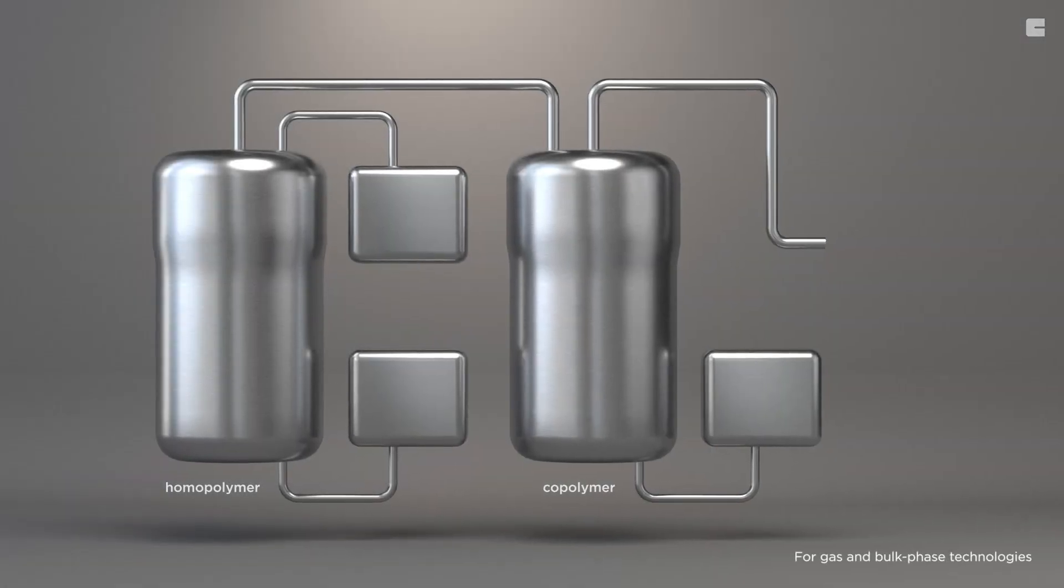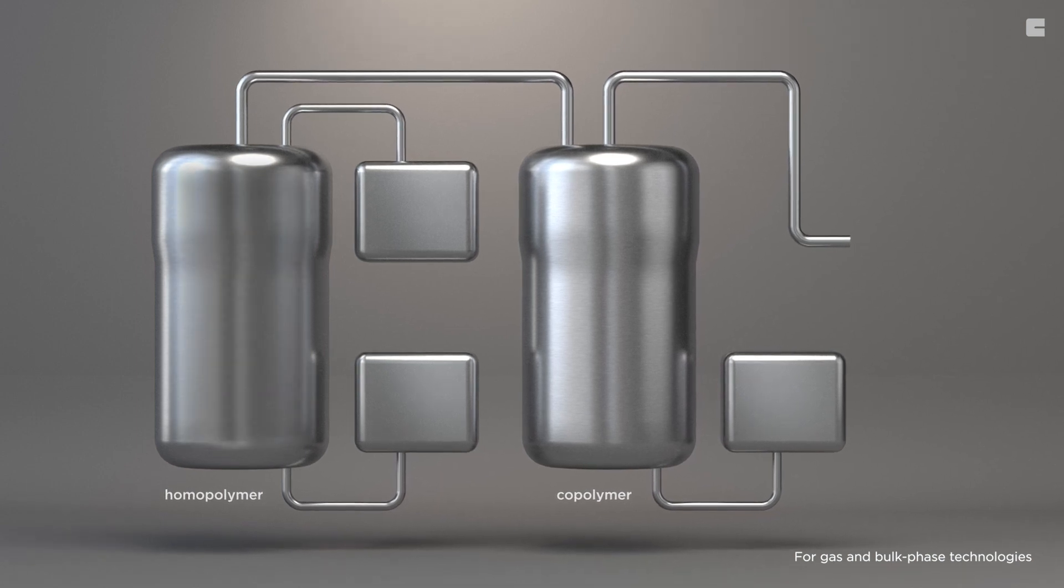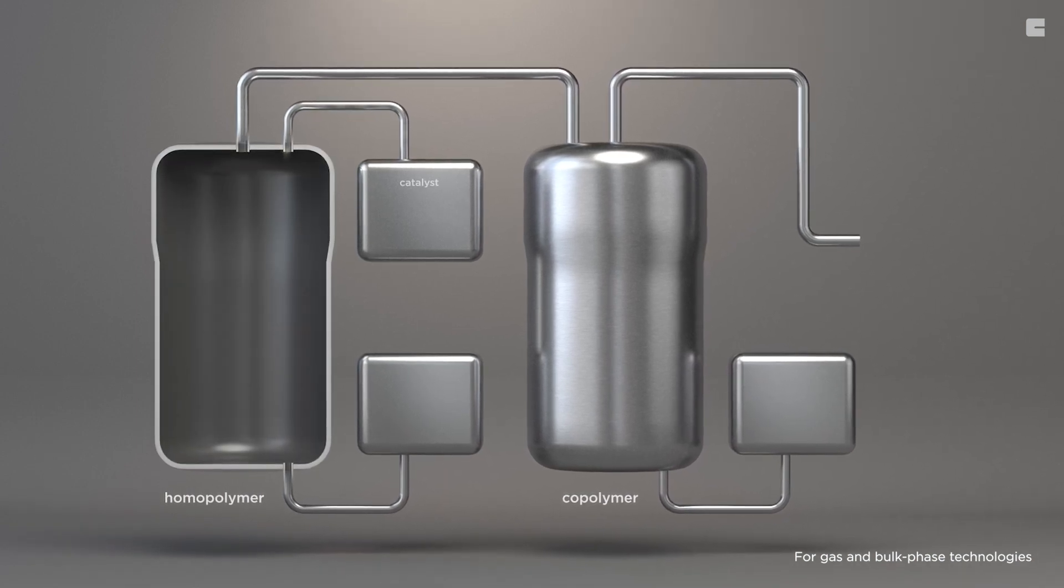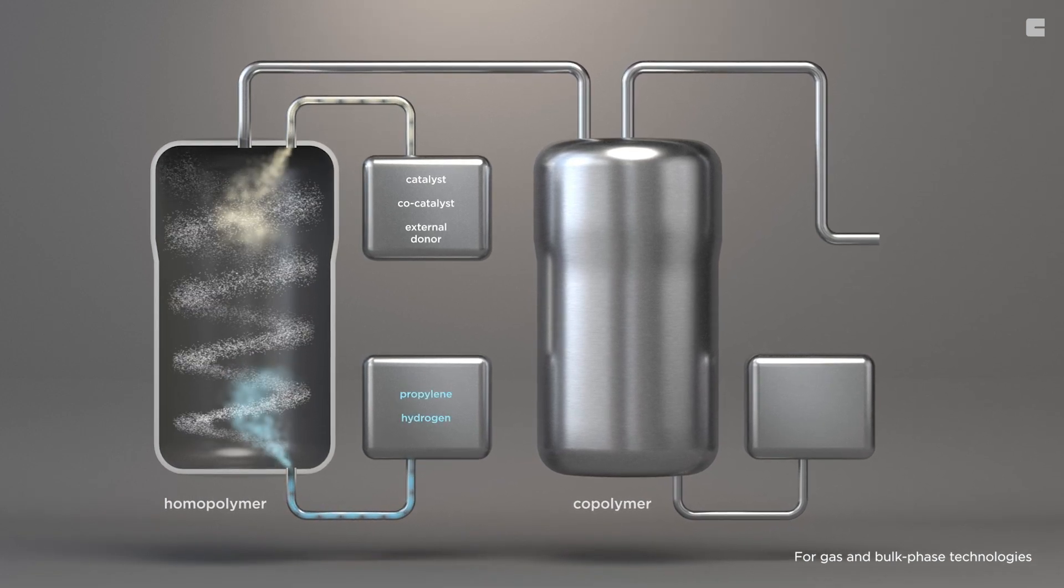Clarient's catalysts are suitable for many different polypropylene technologies, such as bulk and gas phase technology, and are fed with co-catalyst, external donor, propylene and hydrogen into the first reactor to form a high-crystalline polypropylene homopolymer.